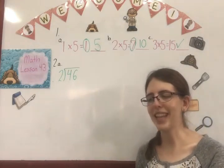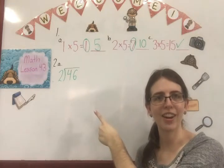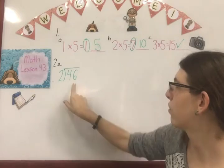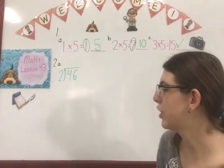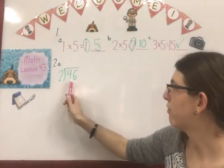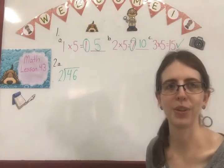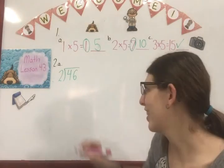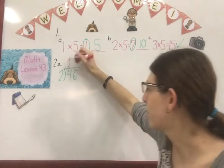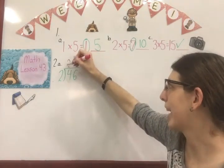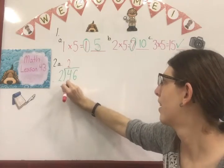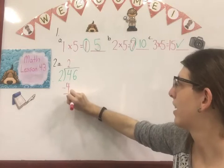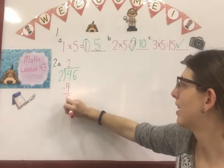Okay. Number 2 says divide and check. We're going to do the first one together and then the other two you're going to do on your own. So we have 46 divided by 2. Let's start with 4 divided by 2. That is 2. Very good. Then we do our next step, which is to multiply. 2 times 2 is 4. Our next step is to subtract. 4 minus 4 is 0.